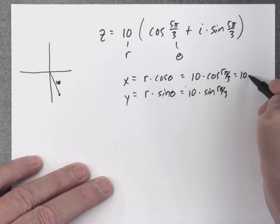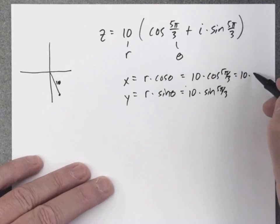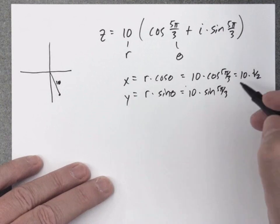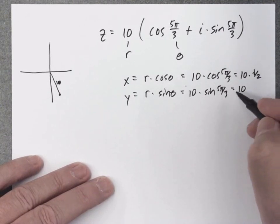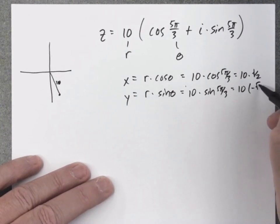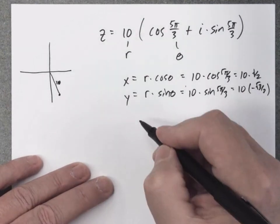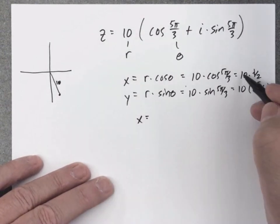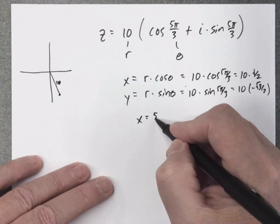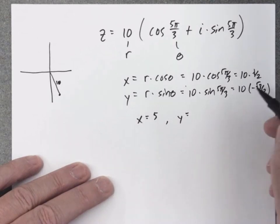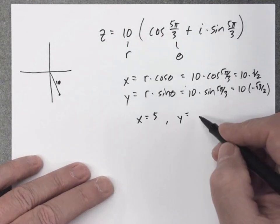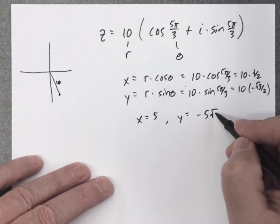So 10 cosine of 5 pi over 3 is actually 1 half, and the sine of 5 pi over 3 is negative square root of 3 over 2. So 10 times a half is 5, 10 times negative square root of 3 over 2 is negative 5 square root of 3.